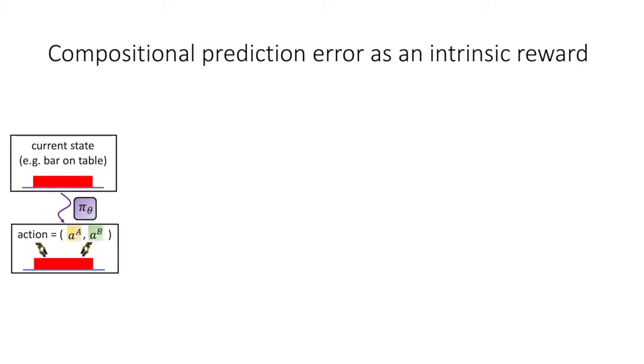Consider the following example. A heavy red bar rests on a table. The policy suggests for the two agents, or arms, to lift the bar from opposite ends.